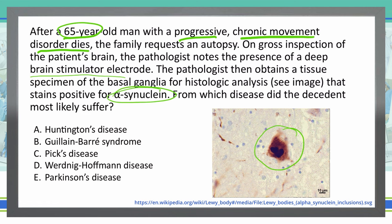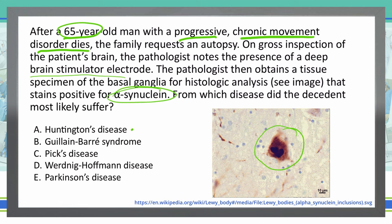Answer A: Huntington's disease. Huntington's disease does have those choreiform movements, which would kind of fit a movement disorder. However, what we're seeing in the picture is a Lewy body — an aggregation of protein — and Huntington's disease does not have Lewy bodies. It's an autosomal dominant disease where the caudate nucleus atrophies. So that removes Huntington's disease as an option.